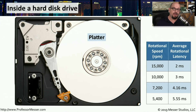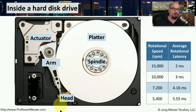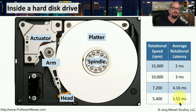If you were able to take off the cover of a hard drive, you'd see a spinning platter rotating around a spindle and an actuator arm that moves back and forth over the platter. The arm reads information using a head at its end. The faster the drive is able to spin, the faster we're able to read the data. For example, a drive spinning at 5,400 revolutions per minute has a rotational latency of 5.55 milliseconds — meaning we have to wait 5.5 milliseconds as the information rotates back around to the read head.